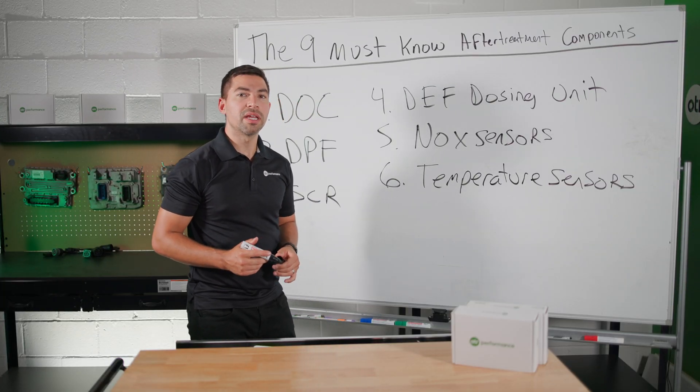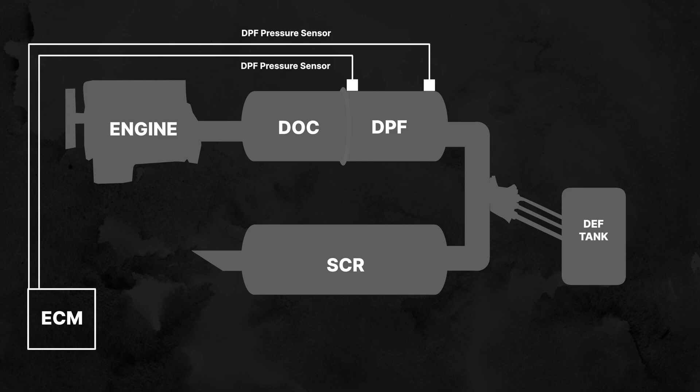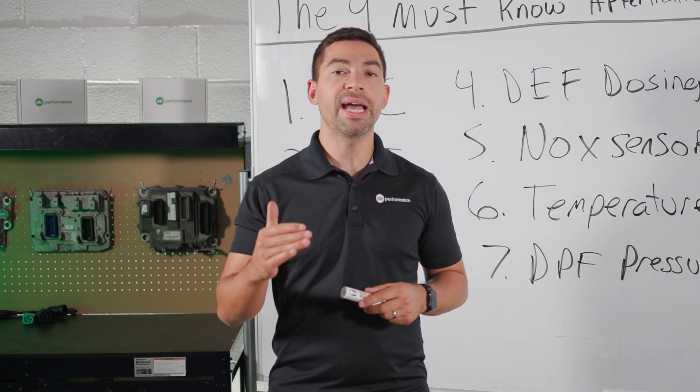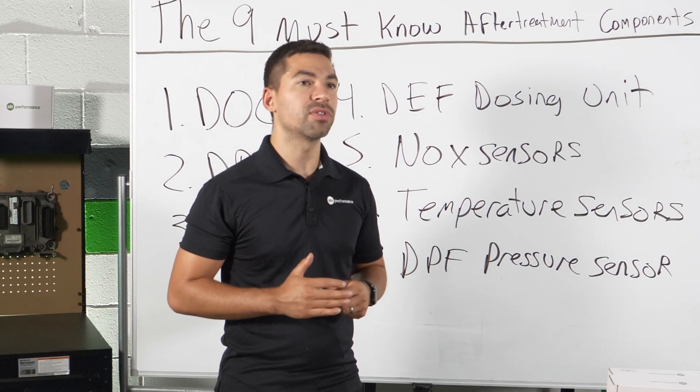The seventh after-treatment component is called the DPF pressure sensor, located before and after the DPF. It measures the pressure differential across the DPF to detect any blockages or restrictions, and this information helps the ECM decide when to initiate a regeneration. If your DPF pressure sensor is always reading high, that indicates high soot buildup in your DPF filter.